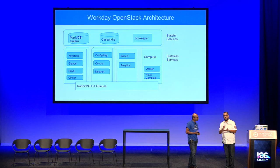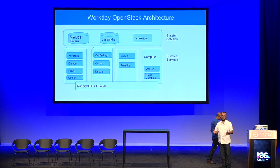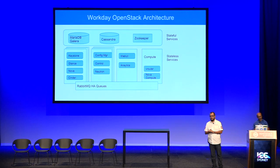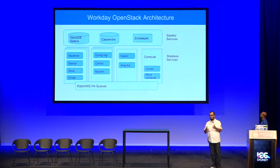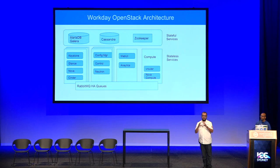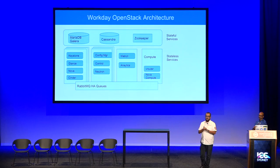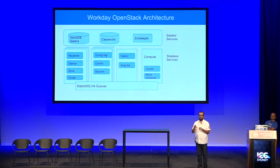Our architecture is the typical OpenStack reference architecture with some modifications. We abstract out the stateful services into what we call an infrastructure server: MariaDB running with Galera replication, Cassandra because we use OpenContrail as our SDN solution, ZooKeeper also needed for OpenContrail, and RabbitMQ with a cluster across three or more OpenStack controllers. Every compute node runs nova-compute and the build router for OpenStack.